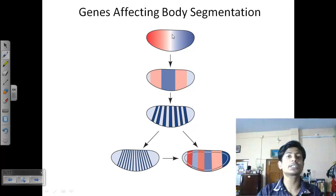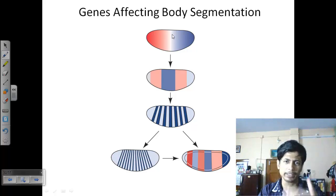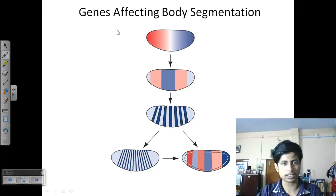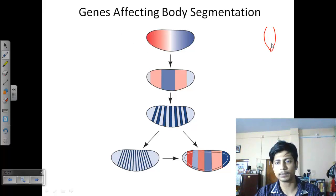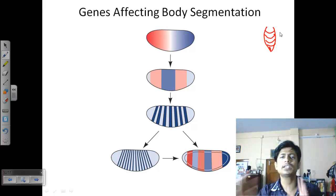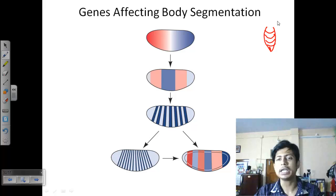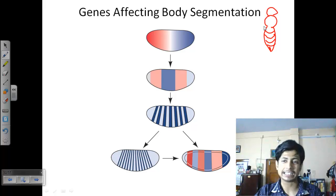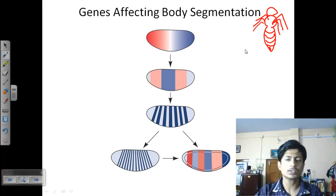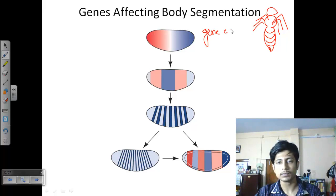Within each segment, there are further subdivisions — for example, the thorax has medial, metathorax, and prothorax regions. The abdomen of an insect, like a butterfly, is further divided into different fragments. Importantly, legs always come from the thoracic region, never from the abdomen. This precise arrangement completely depends on gene expression.